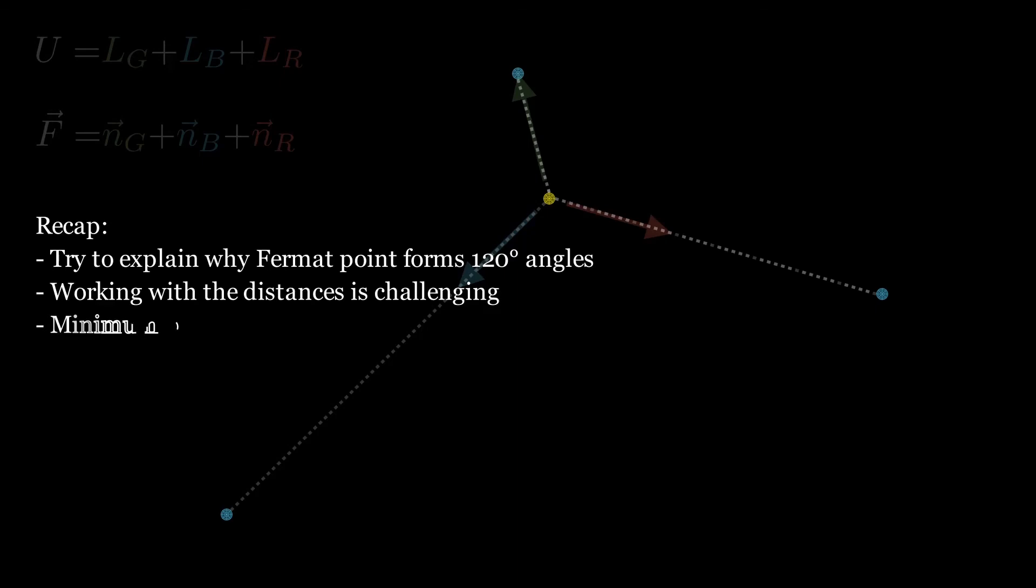So instead, we can work with these virtual forces, where they add up to zero only if the potential, or in this case the distance, is minimized. Since the forces end up all being equal, we conclude that the angles they form when adding up to zero must be 120 degrees.